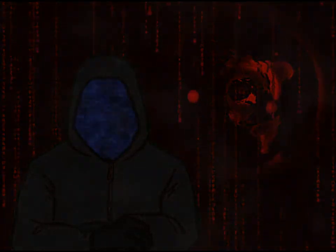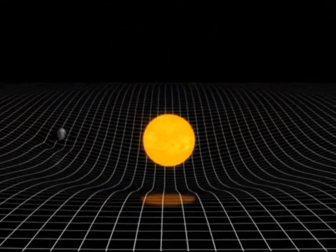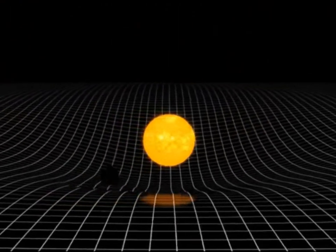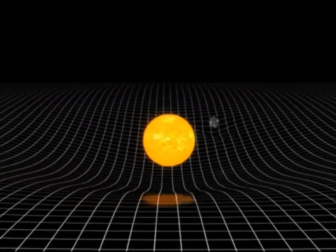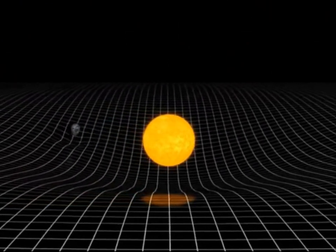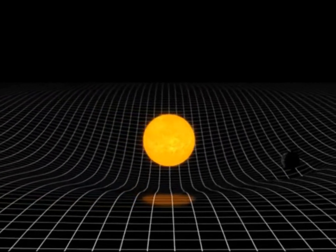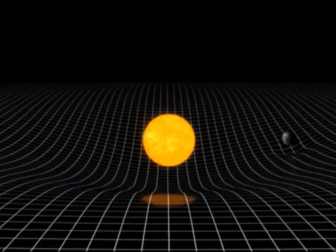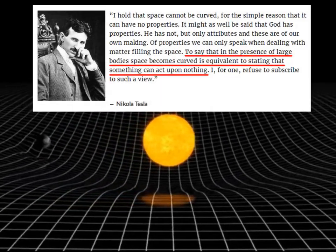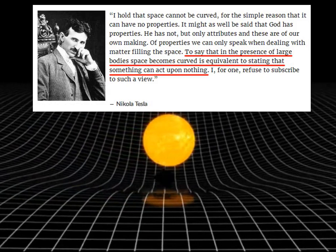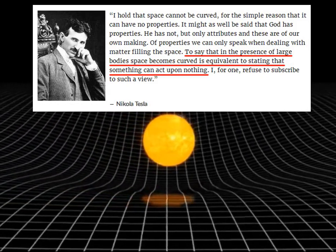So what is gravity? Well, according to the heliocentric model, gravity is the force that attracts a body towards the center of the earth or towards any other physical body having mass. Their claim is that a large mass bends the fabric of space, but space is simply the absence of matter, so how do you bend nothing? It's like Tesla said: to say that in the presence of large bodies space becomes curved is the equivalent to stating that something can act upon nothing.